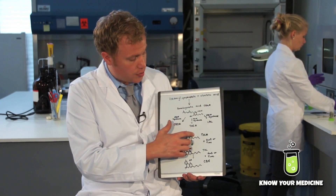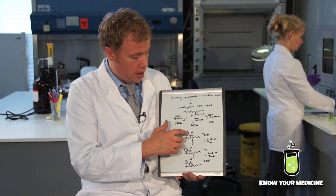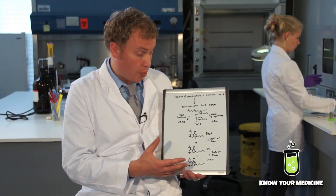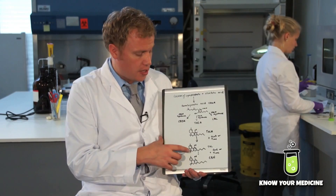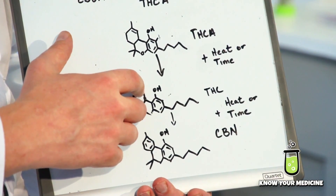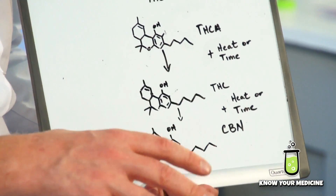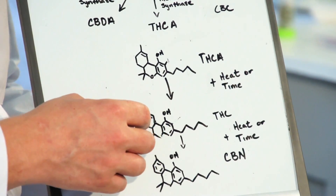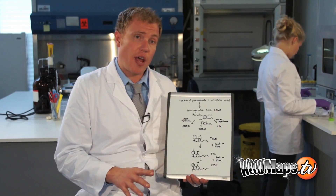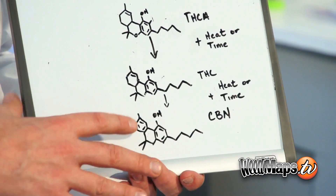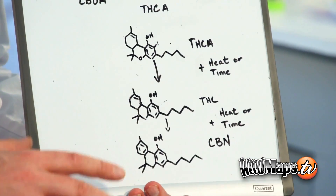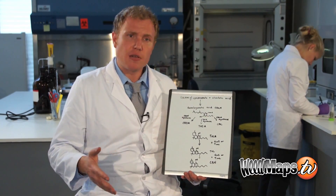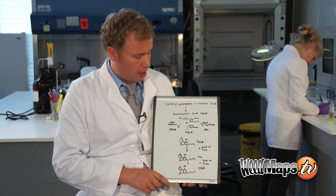The THCA decarboxylates — we lose that carboxylic acid — and form THC. THC, over time or with heat, will degrade into CBN, and all that's happening is we're losing hydrogen atoms and forming double bonds in this ring right here. That causes a weaker interaction for this compound with the CB1 and CB2 receptors, and that weak interaction is what leads to the sedative effect and the drowsiness associated with CBN.